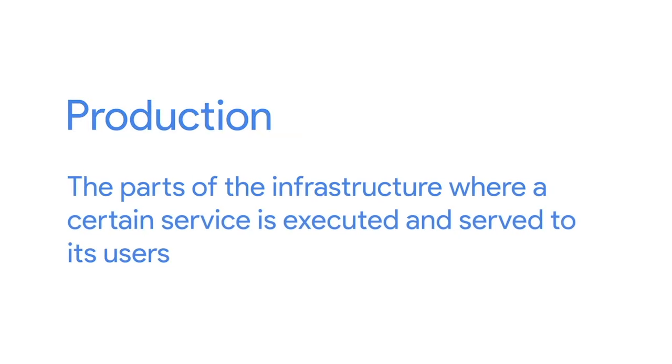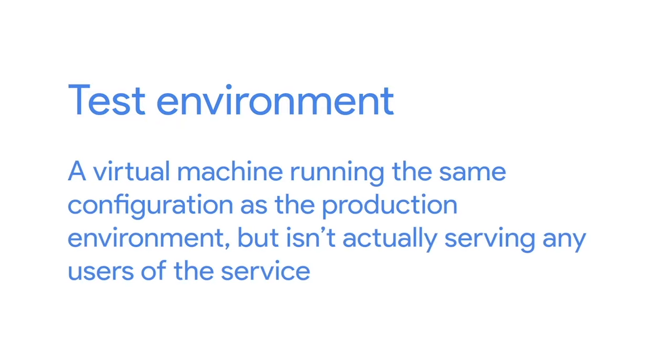Let's define what we mean by production. In an infrastructure context, production refers to the parts of the infrastructure where a certain service is executed and served to its users. If you host a website, the servers delivering content are the production servers. If you need to make an important change in your production infrastructure — adding a new service, changing configuration, updating the OS, or shutting down a service — the key to safely making these changes is to always run them through a test environment first. The test environment is usually a virtual machine running the same configuration as production but not serving any actual users.